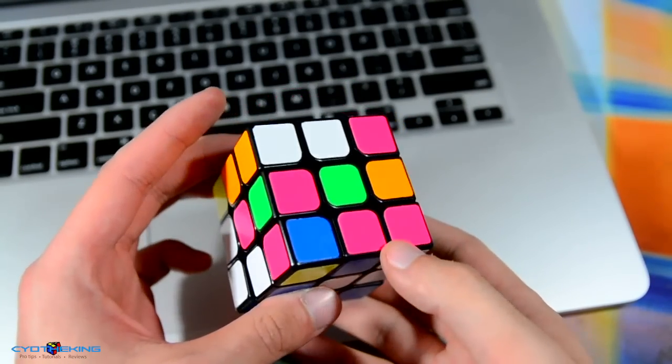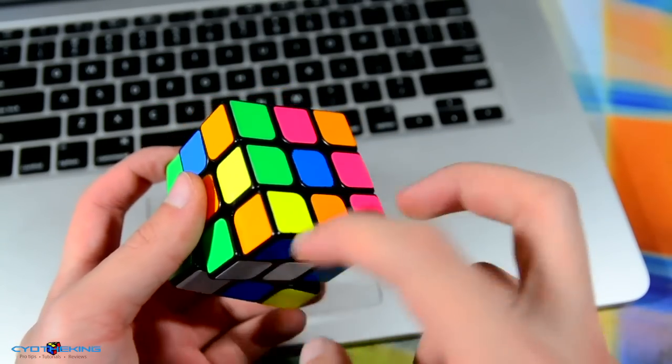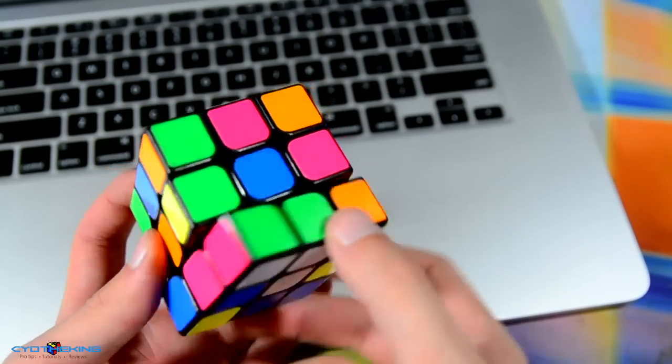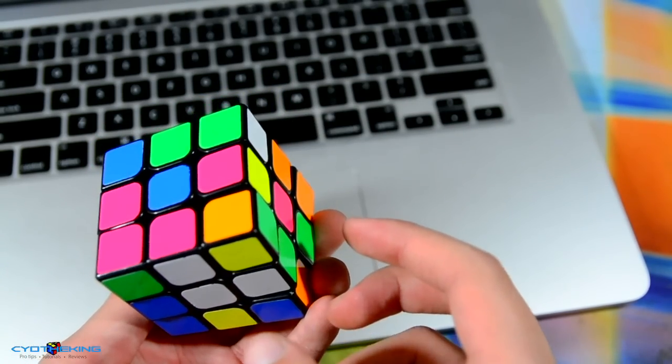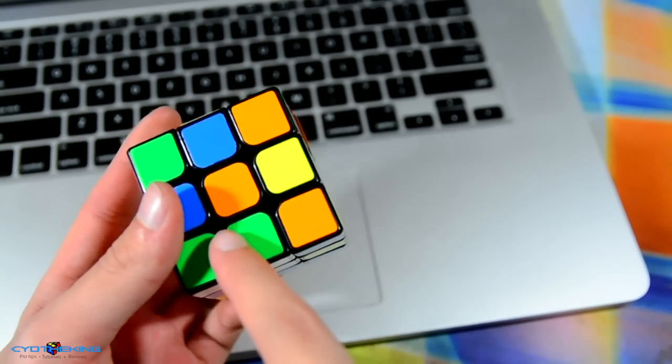For this solve, the first thing that I saw was this green-white piece and this pink-white piece. I knew if I put this over here like this and put that down, I could solve these with a D. That was the first thing I did, and I also knew that this would bring this blue-white piece here.